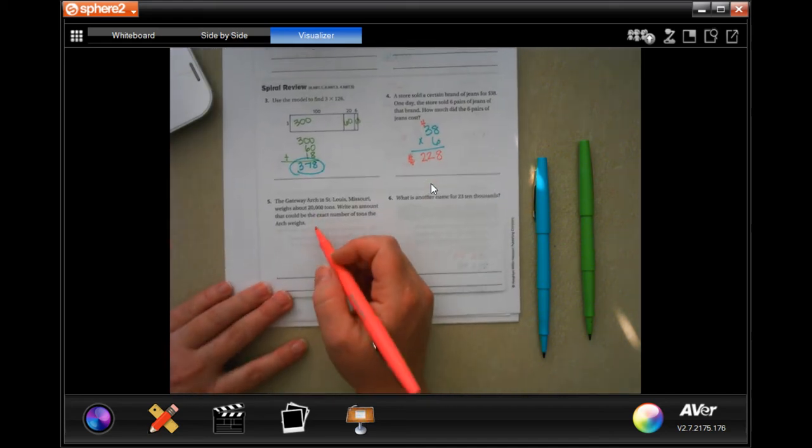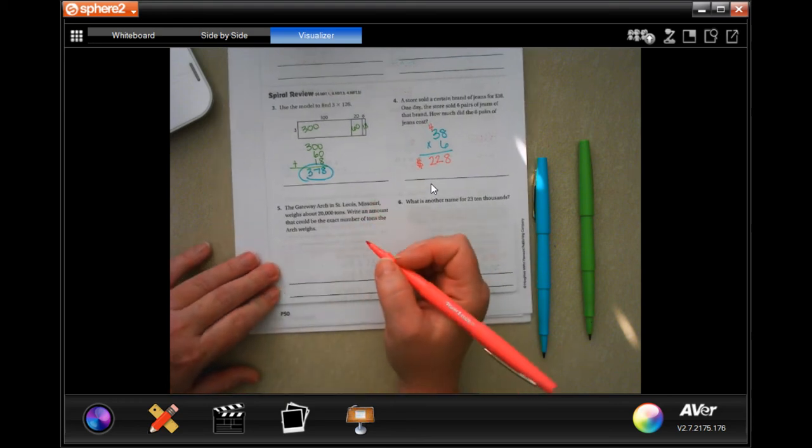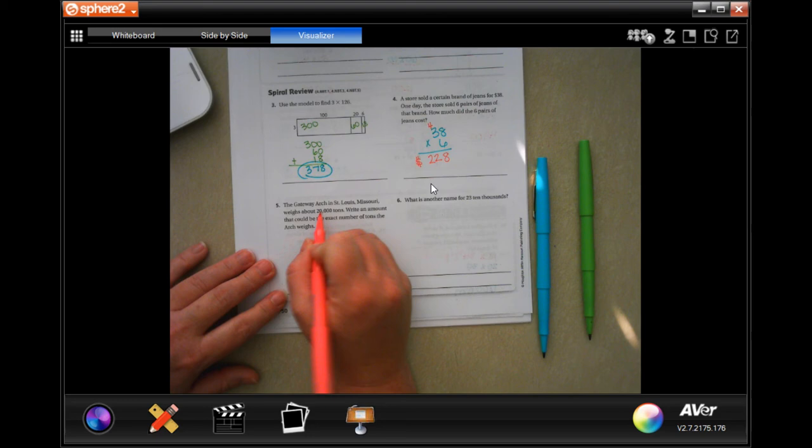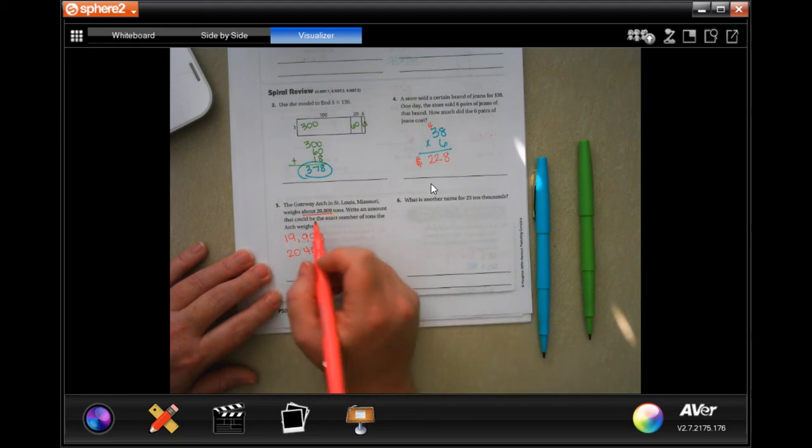The Gateway Arch in St. Louis, Missouri, weighs about 20,000 tons. Write the math, it could be the exact number of tons the arch weighs. So we just need something that rounds to 20,000. So it could be 19,998. It could be 20,403. It could be any number that would round to 20,000.